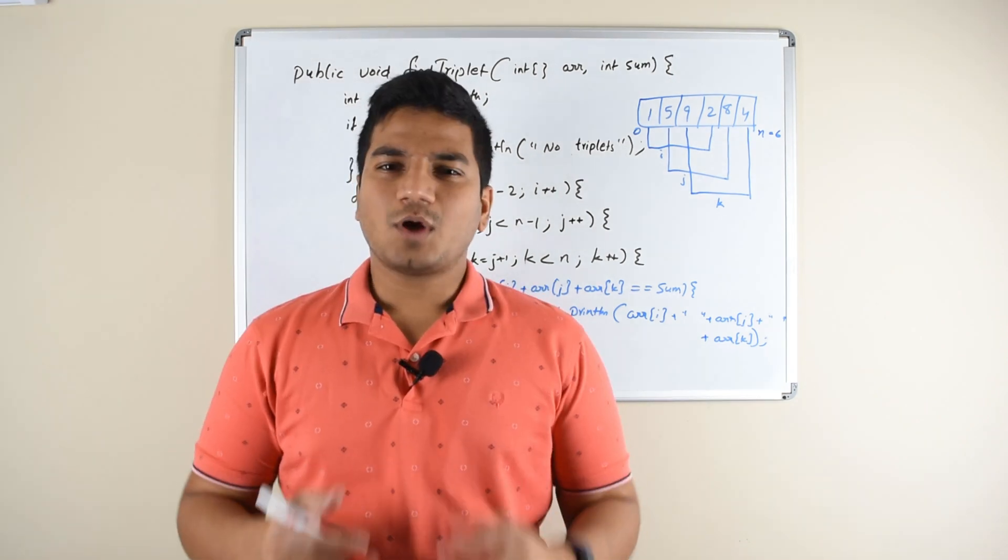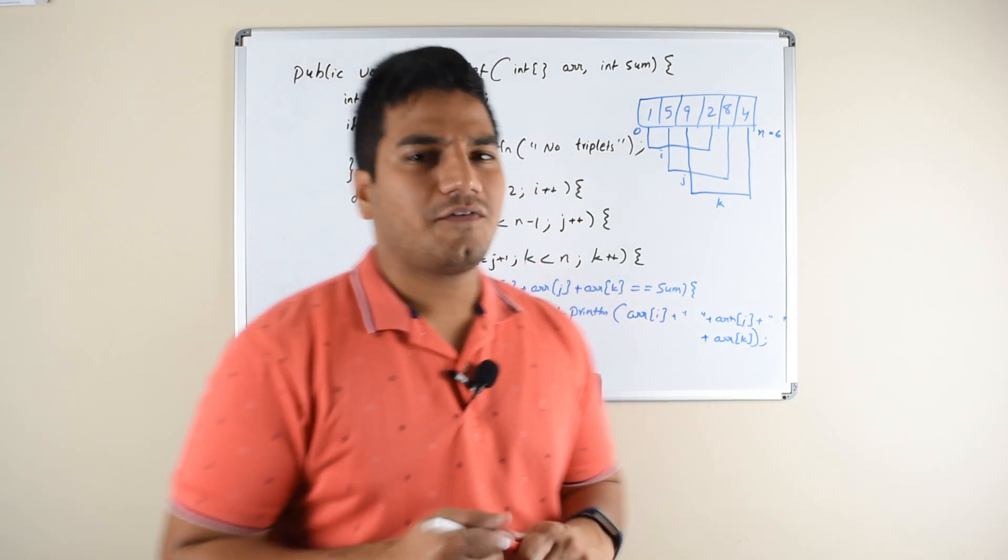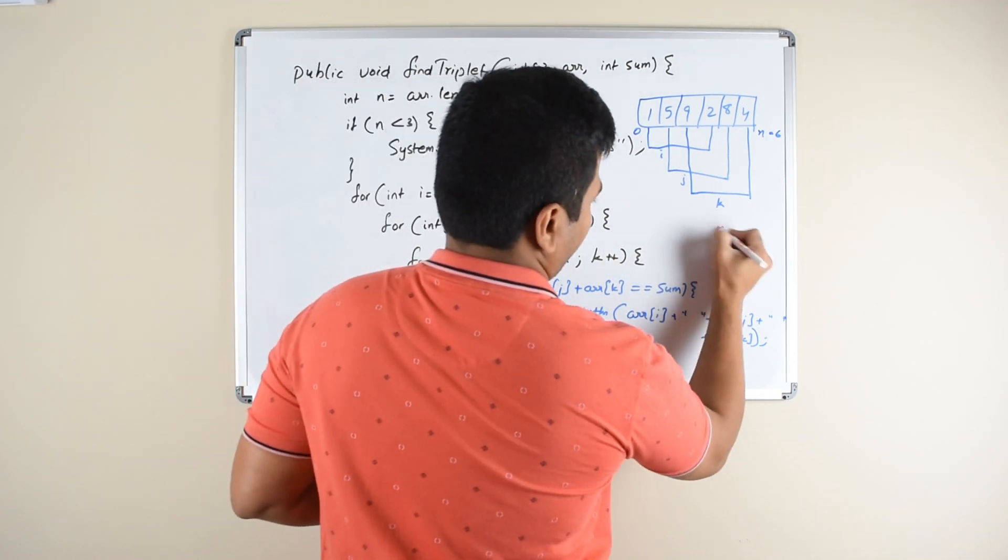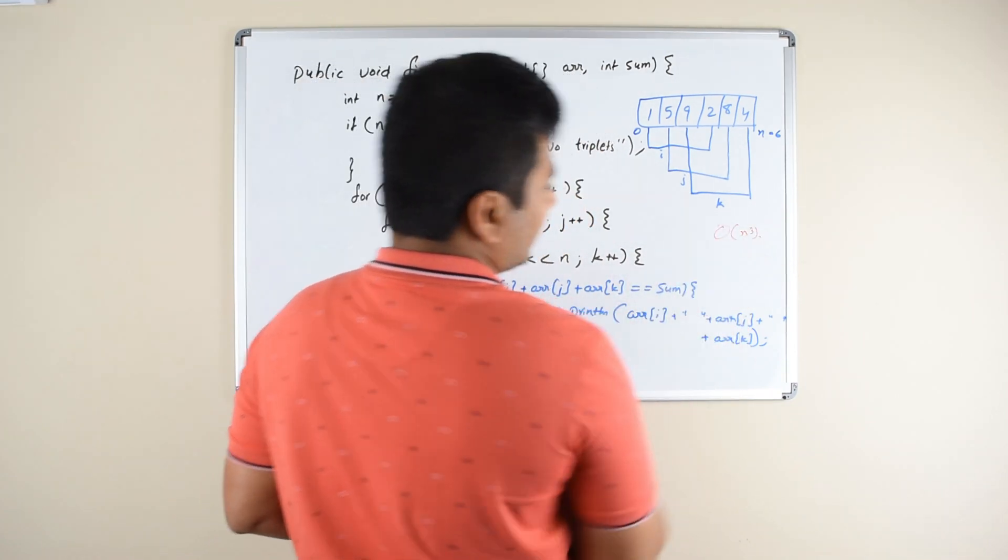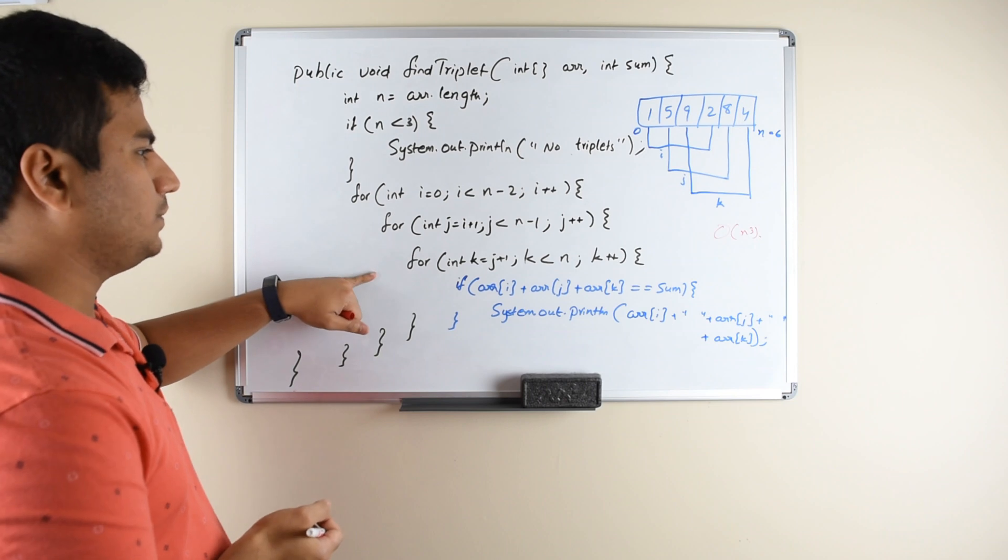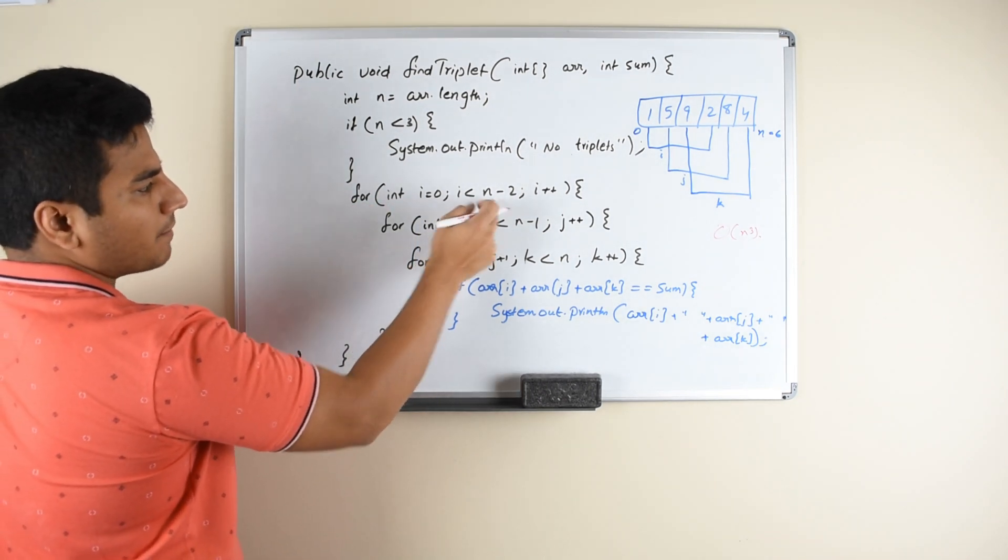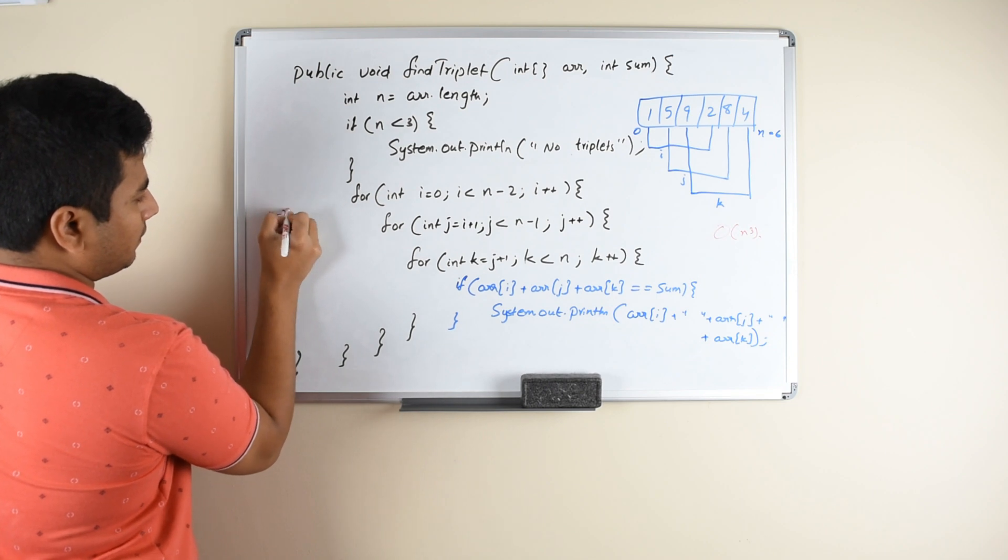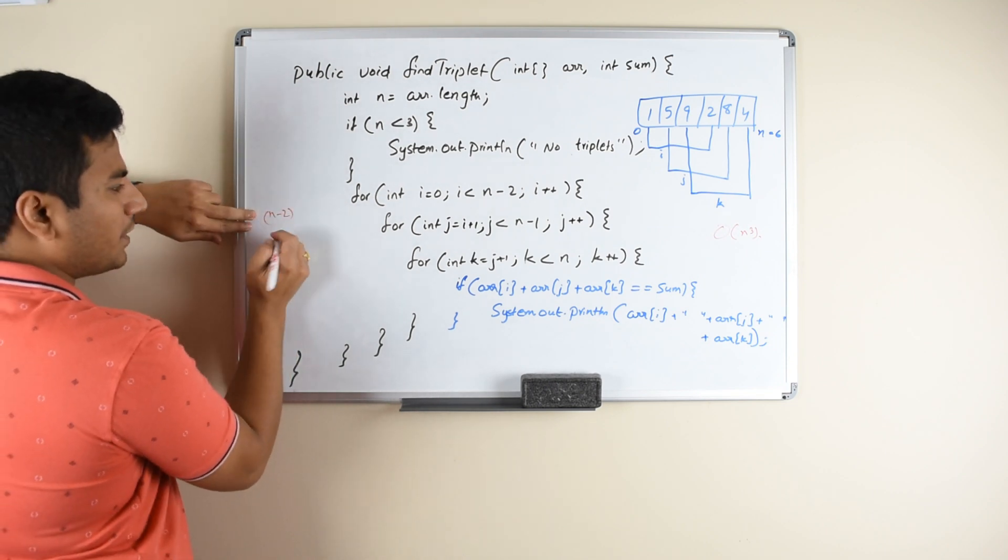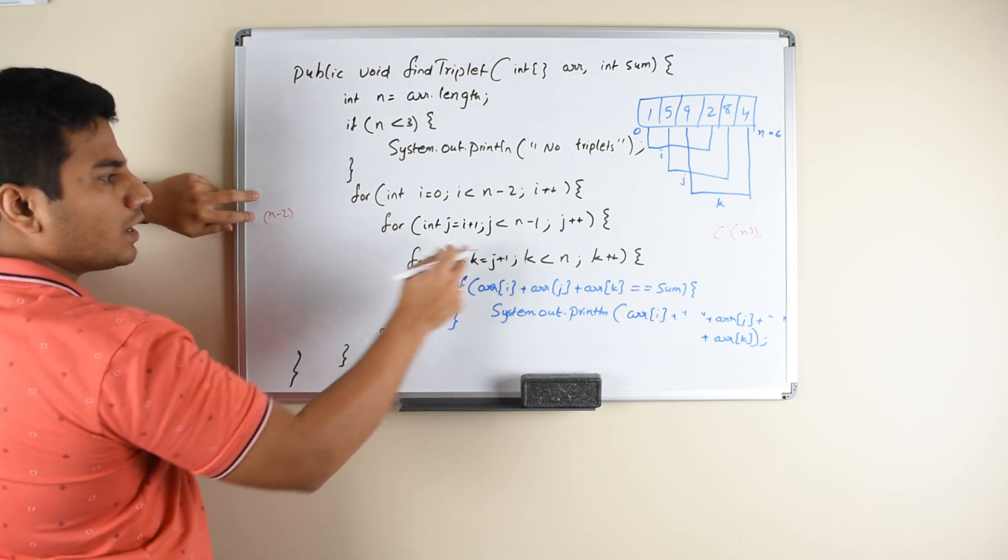The time complexity of this approach would be O(n³). This is because you have three loops. In the first loop you are iterating over n minus 2 elements. And for each of the elements in this n minus 2 set, you are doing again